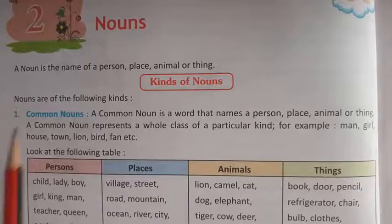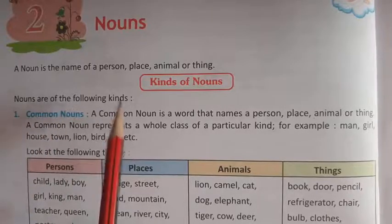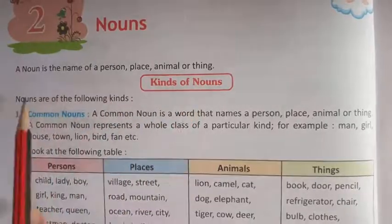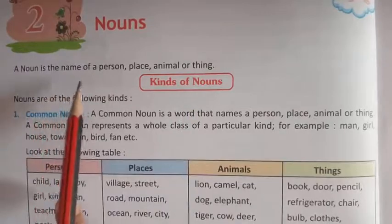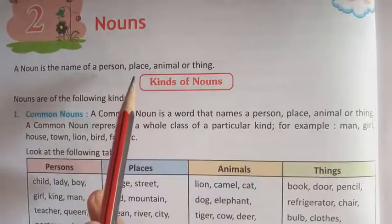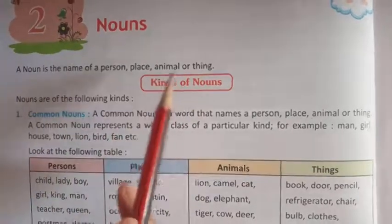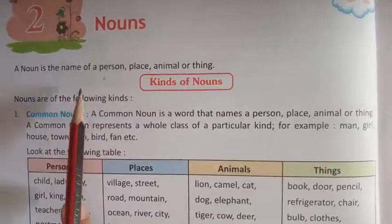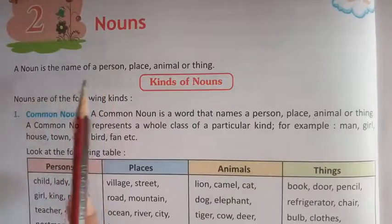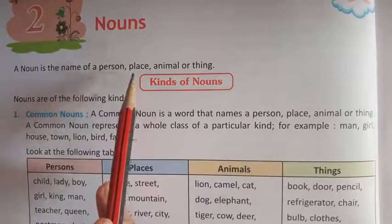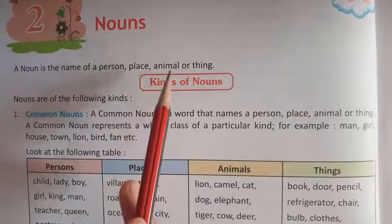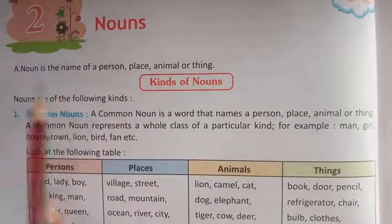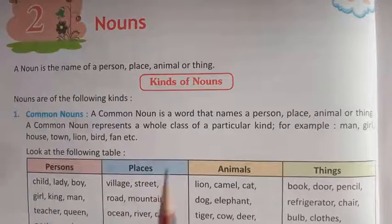A noun is the name of a person, place, animal, or thing. So Nouns क्या होता है? किसी person का, place का, किसी जगह का, या फिर किसी animal या thing के name को Noun कहा जाता है.